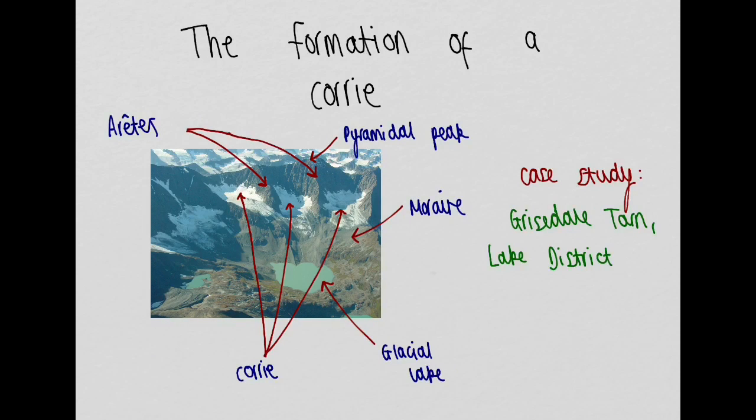Hi there, I'm here today to talk to you about the formation of corries. You can see an image of a glacial landscape here, with three corries identified for you, along with other landforms present in this glacial landscape.